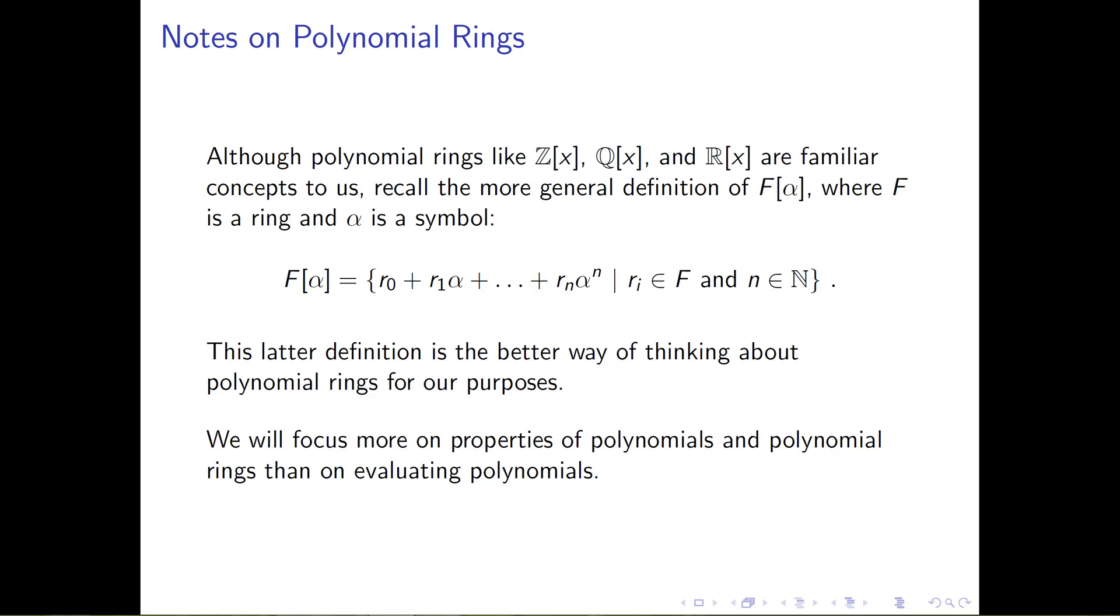I want to digress for one second, it's possible that when I have this F adjoined α notation, if I'm talking about that polynomial ring, one thing that I may do is refer to the ring F as the ground ring. This is not something that's done in Gallian, and I will try to refrain from using this notation, but if I say the phrase ground ring, that's what I mean.